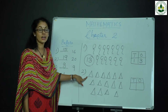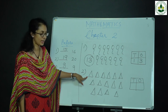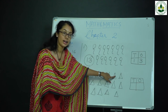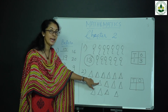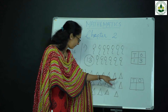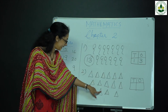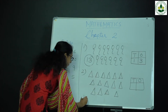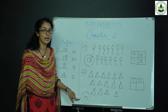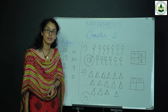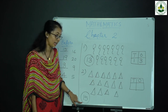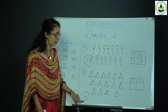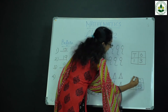Next, count the total number of triangles: 1, 2, 3, 4, 5, 6, 7, 8, 9, 10, 11, 12, 13, 14, 15. Total triangles is 15. How many tens and ones in 15? 1 ten and 5 ones.